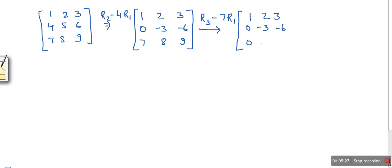And here we will get minus 6. It was 7. If you multiply 7 with 2, you will get 14. And when you subtract 14 from 8, you will get minus 6. And here you will get minus 12.